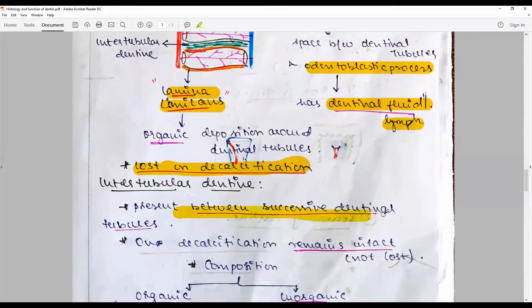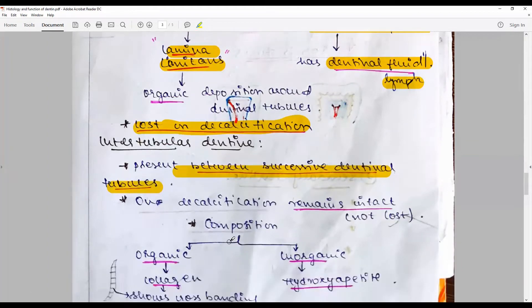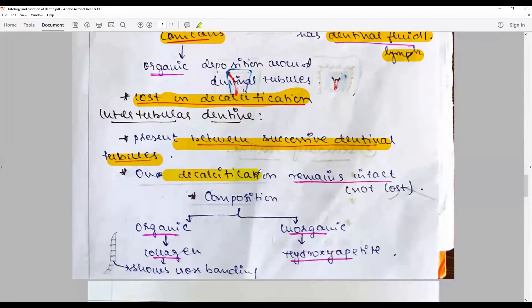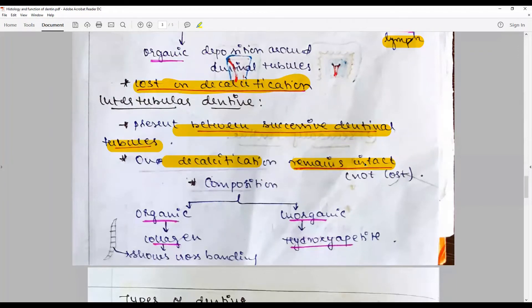The intratubular dentin is present between two successive dentinal tubules. With decalcification, because of their hypermineralization, they remain intact. That is why we perform a procedure clinically called acid etch, which is mostly with enamel. The tag of dentin, if we go too deep, is problematic.